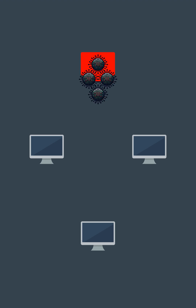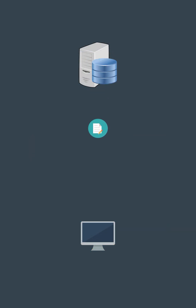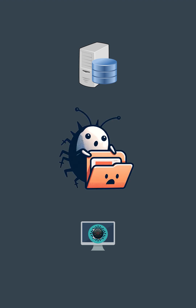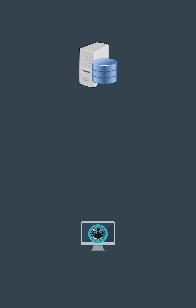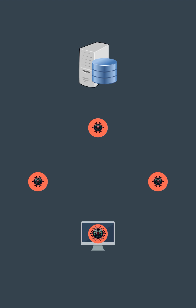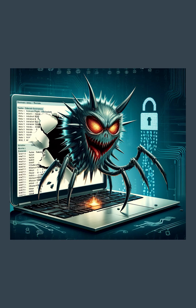A computer virus is a type of malicious software designed to spread from one computer to another, disrupting normal operations. Imagine you download a file from an untrusted source — this file has a virus attached to it. When you open the file, it seems normal, but in the background, the virus gets executed. A virus needs a host, such as a legitimate program or file, to replicate itself. Once activated, it can replicate and attach itself to other files, spreading the infection across your computer. The damage caused by a virus can range from displaying annoying pop-ups to corrupting your data or stealing personal information. They exploit vulnerabilities in your software to gain access and execute their malicious payload. To protect your computer, use updated antivirus software, regularly update your operating system and applications, and avoid opening suspicious emails or downloading files from untrusted sources.